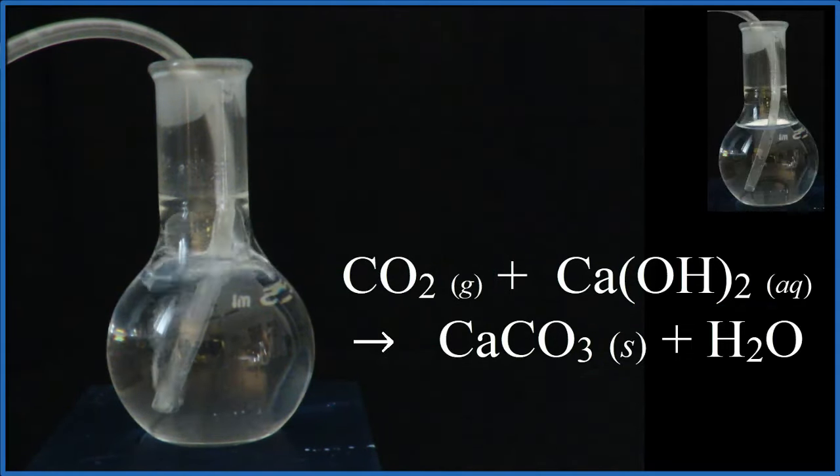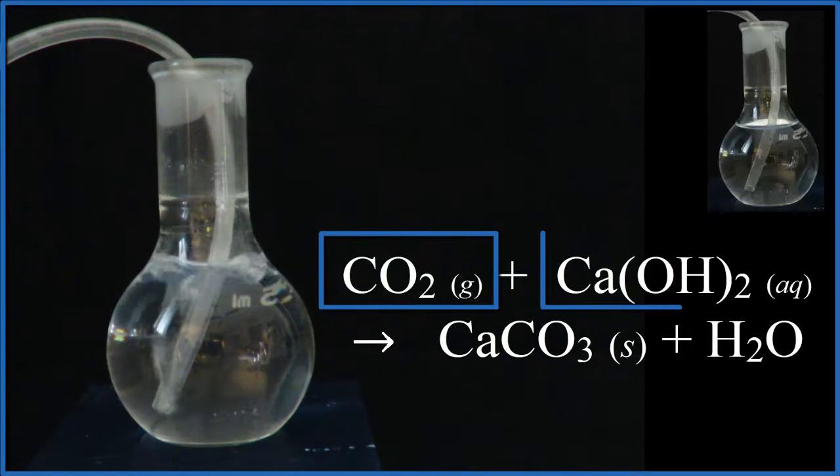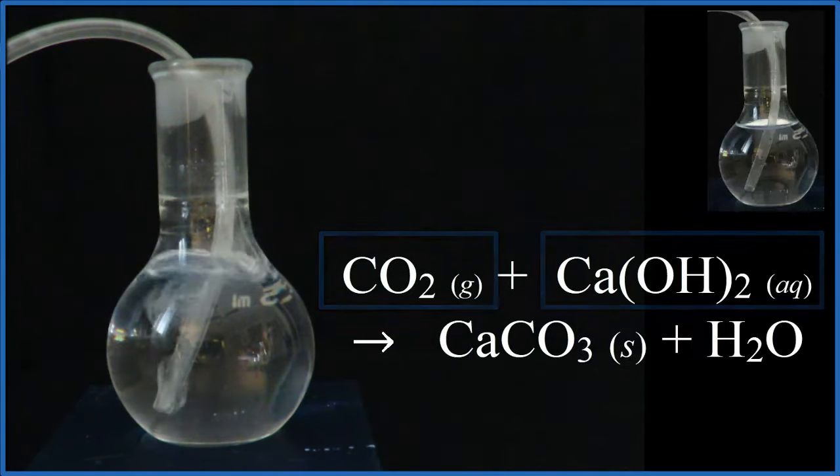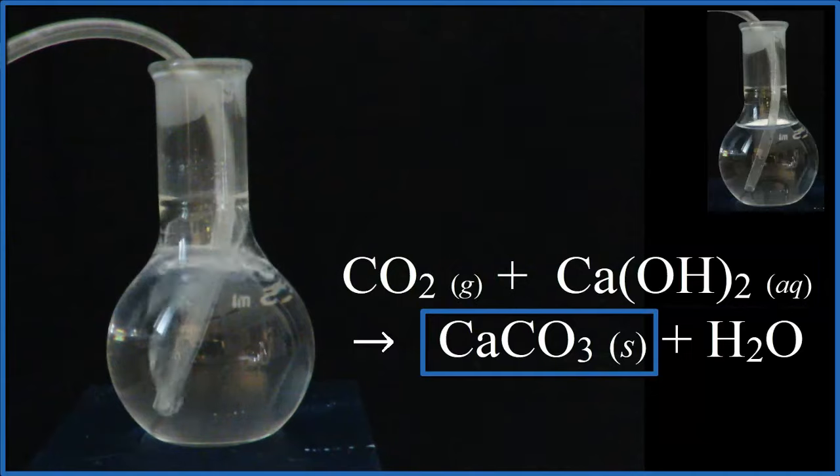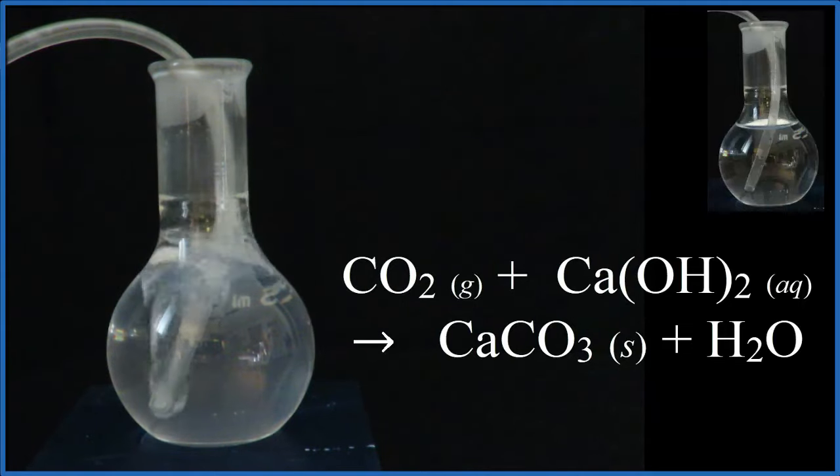If you look at the reaction you can see we have carbon dioxide, calcium hydroxide, and in the products we have that solid calcium carbonate. That's the precipitate and eventually that's what will change the solution to the milky white color and that's the test for carbon dioxide.